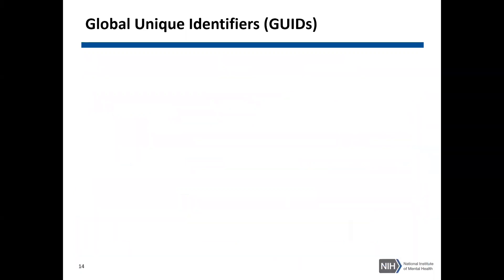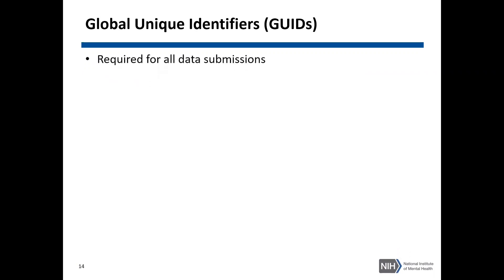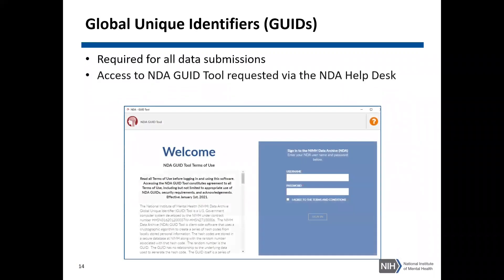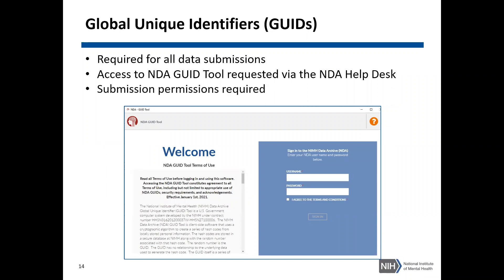Our last prerequisite are the Global Unique Identifiers or GUIDs. These are required for all data submissions. Access to create GUIDs through the NDA GUID tool is requested through the NDA Help Desk, and in order for the NDA Help Desk to provide you permissions, you must have submission permissions to an active NDA collection.